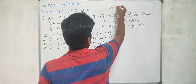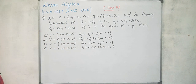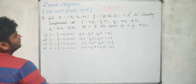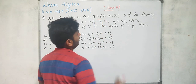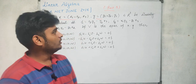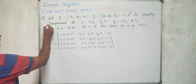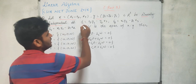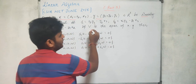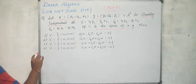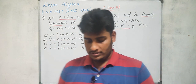The question from Part B of CSIR June 2016 states: let X = (X1, X2, X3) and Y = (Y1, Y2, Y3) be vectors from R³. X and Y are given to be linearly independent, and there are quantities delta1, delta2, and delta3. If V is the span of X and Y, we have to choose one correct option from four options.